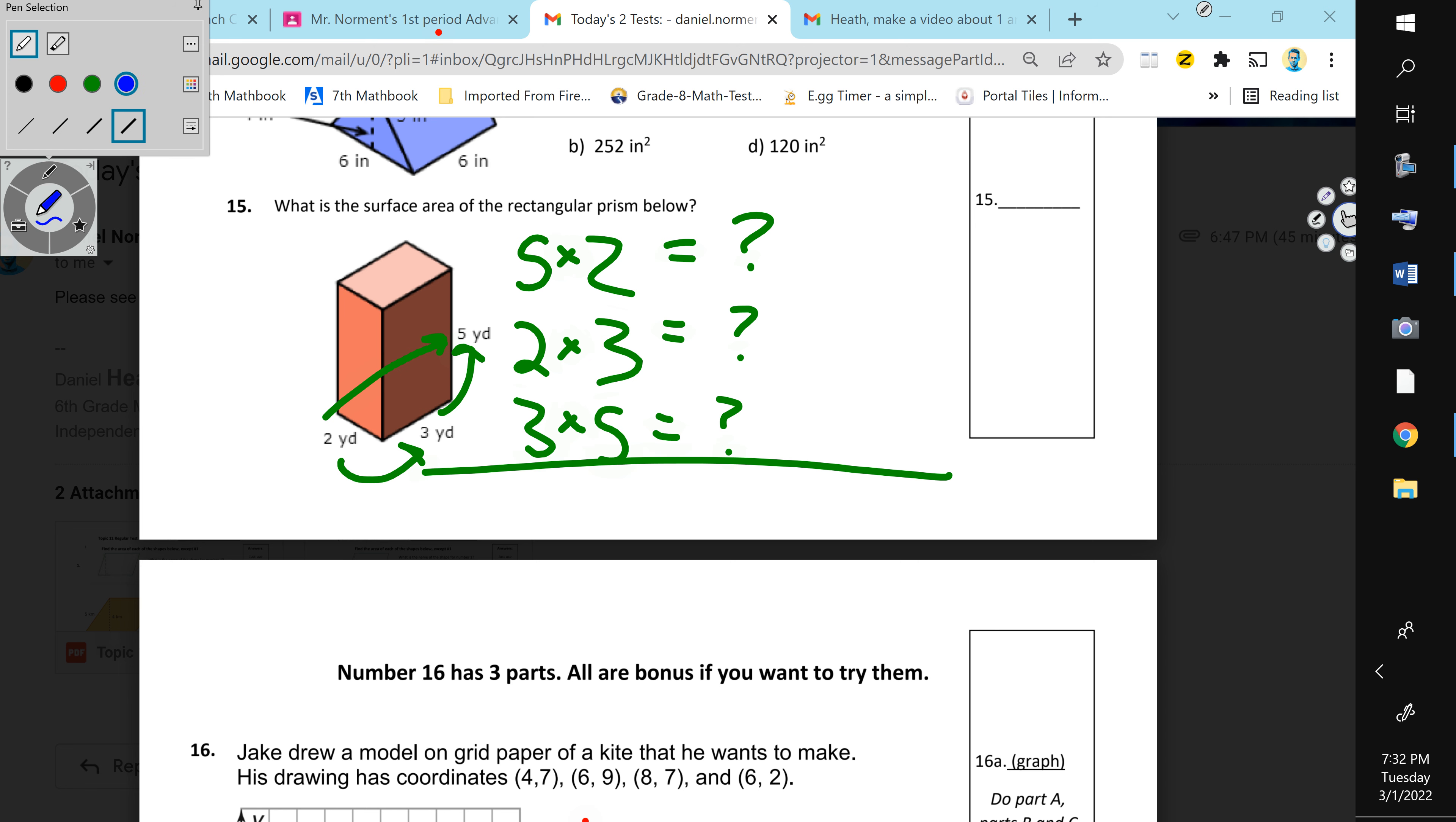And when you get those three numbers, add them together, okay? And that's going to be half the surface area. And then, you're going to multiply times two to equal the answer. Or you can just add it to itself. It does the same thing.